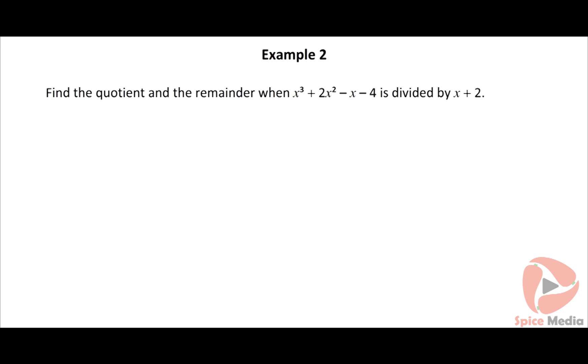Here is an example that applies the Horner's method of synthetic division. Find the quotient and the remainder when x³ + 2x² − x − 4 is divided by x + 2. Click on the solution button to view the solution.